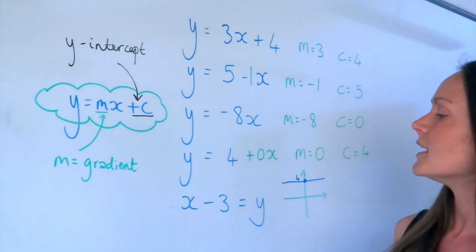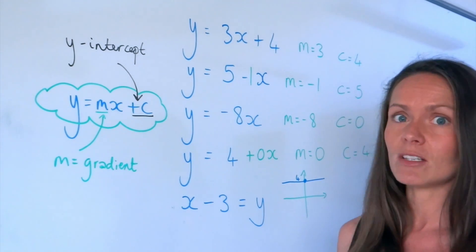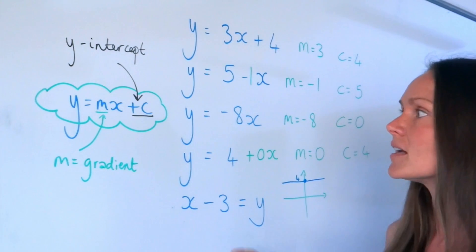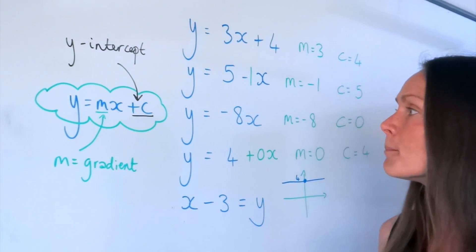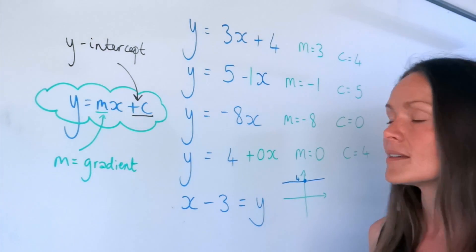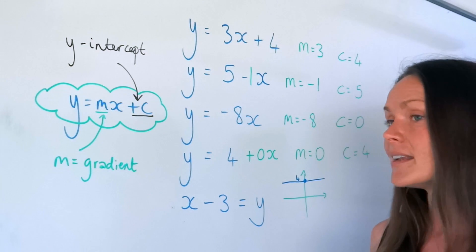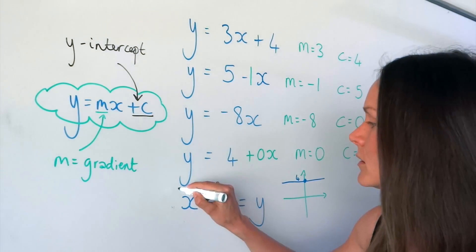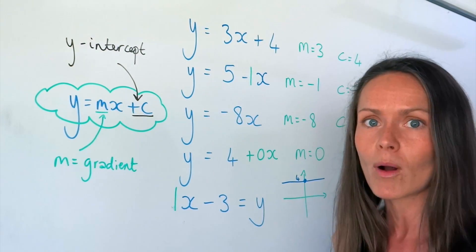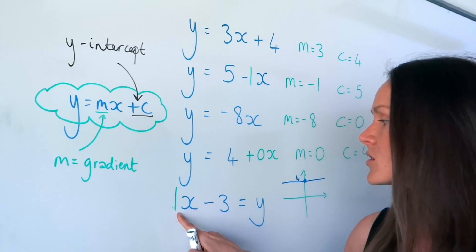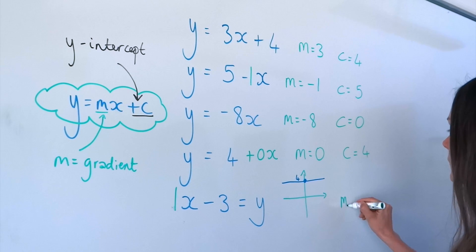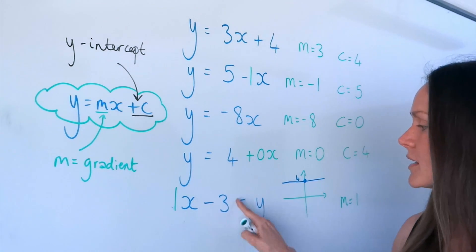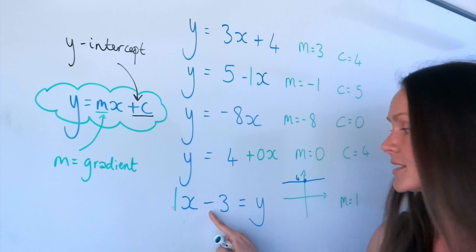In the last one it looks a bit harder, but it's actually not, because it's already organised into y equals — except y is on the right-hand side instead of the left. But because it says y equals, it's exactly the same method. m, the gradient, is the number in front of the x. There's an invisible 1 there that we don't normally write, so the gradient is positive 1. And the number by itself is the y-intercept, c, which is negative 3.